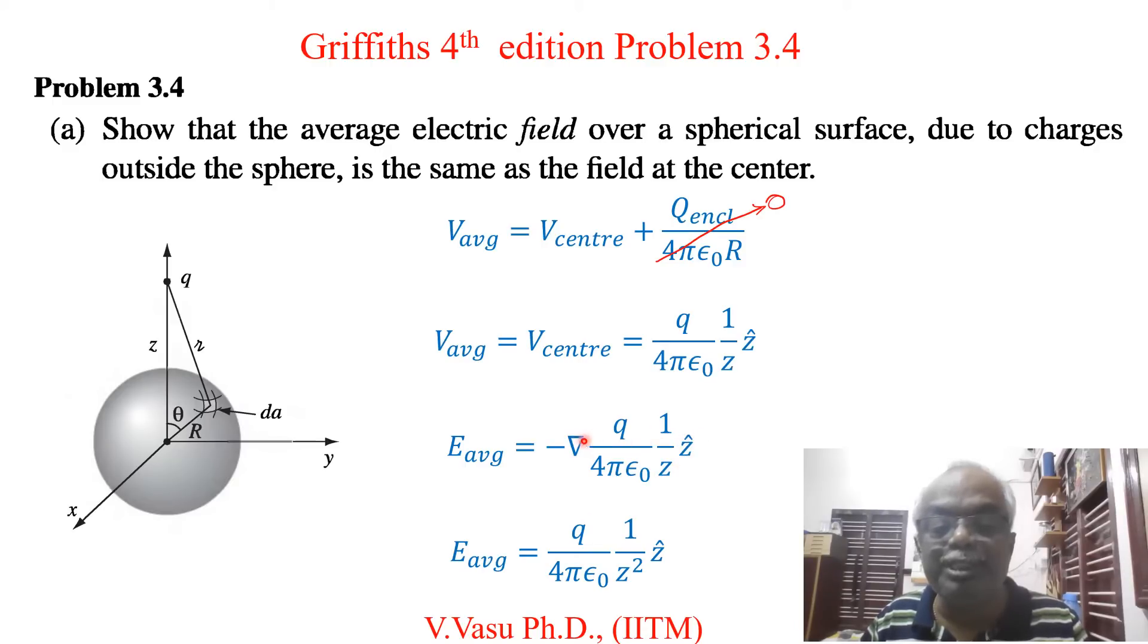If we differentiate this with respect to z, using ∂/∂z, then 1/z becomes -1/z². Since there's already a negative sign from the gradient, this becomes +1/z².